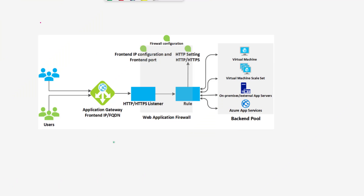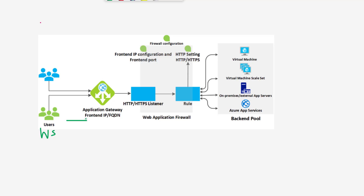Let's understand the Application Gateway configuration using this diagram. A web application user connects to the public front-end IP address of the Application Gateway. The Application Gateway has a listener — a web listener — that receives this connection. The listener forwards traffic to a web rule, so any traffic arriving at the web listener is forwarded to the web rule.